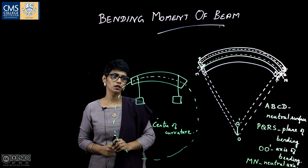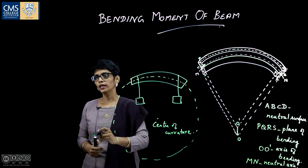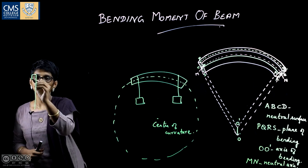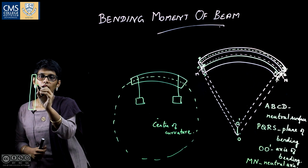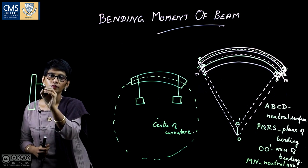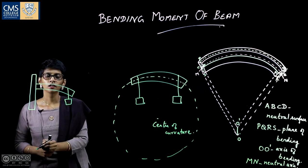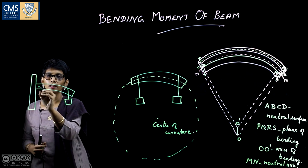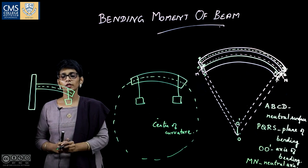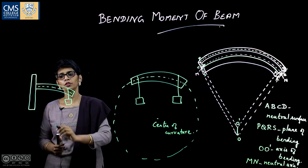In the case of non-uniform bending, we clamp one edge and give a load to the other edge. The beam bends, and at the neutral axis the radius of curvature is not uniform. That is why it is called non-uniform bending.